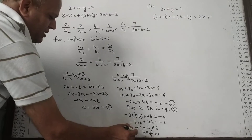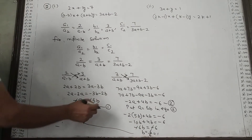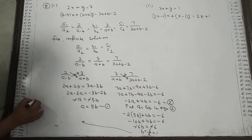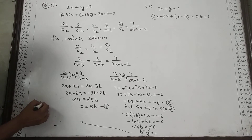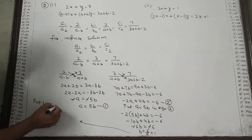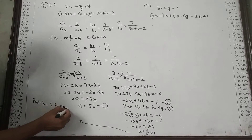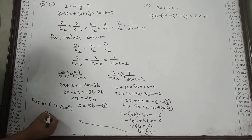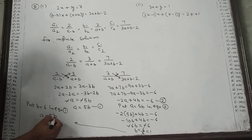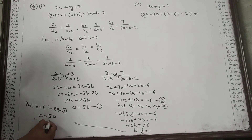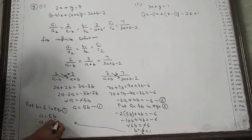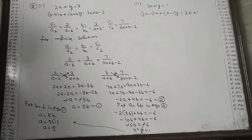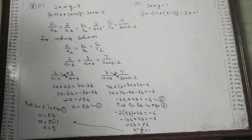Now the remaining part: b's value is 1. Put b equal to 1 in equation 1, which is a equal to 5b. So a equal to 5 times 1, therefore a equal to 5. In this way we have part 1 complete.